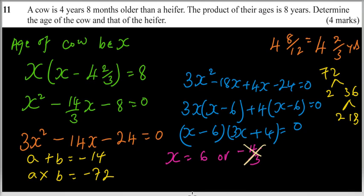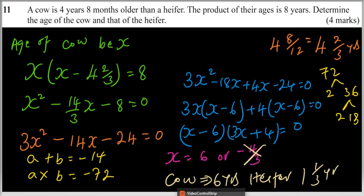Because we have defined the age of cow to be X, the cow is 6 years. And the heifer, if you subtract 6 minus 4 and 2 thirds, you'll be able to get 1 and a third years, which you can also say is 1 year and 4 months, because a third is 4 months.